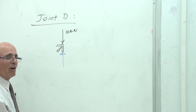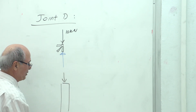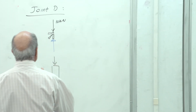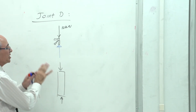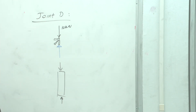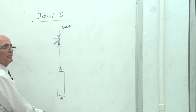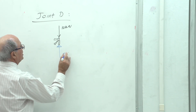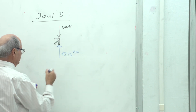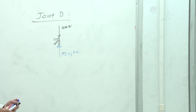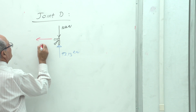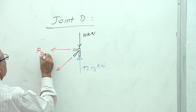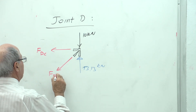At joint D, the two unknown forces — FDC and FDF — are drawn in tension mode. The slope of member DF is still 4-run, 3-rise. Using sigma Fy = 0 first (since FDC has no y-component): −10 + 13.13 − (3/5)FDF = 0. Solving: FDF = 5.21 kN — positive, so member DF is in tension. That direction was correct.